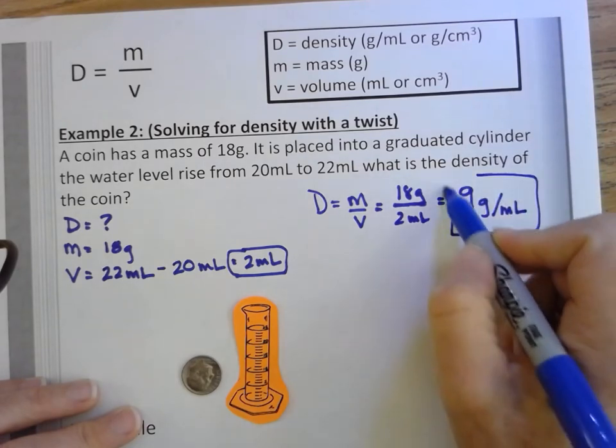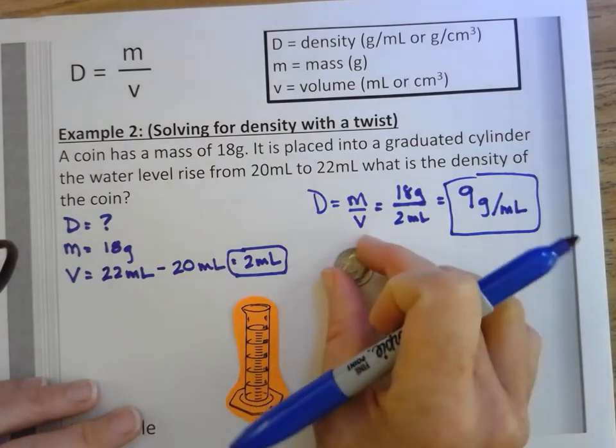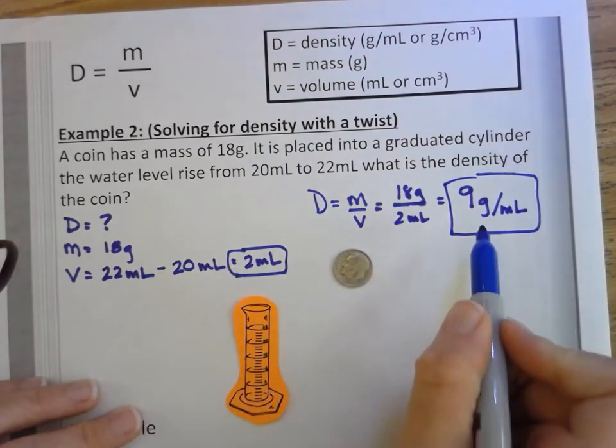And that is that. So the density of this coin, based on this problem, is 9 grams per milliliter.